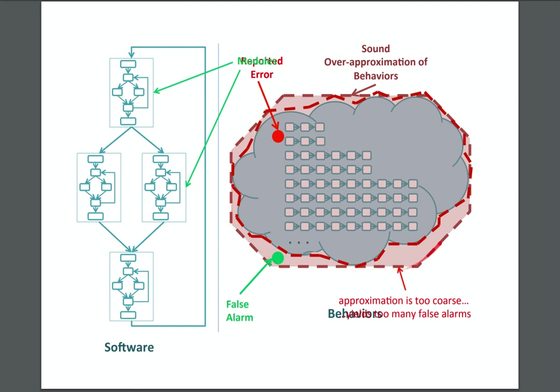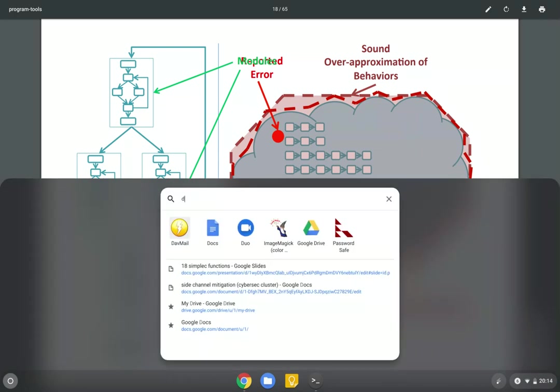Let's say we run our static analysis and it can't prove safety — we get an alarm — and we know the bug is somewhere. The hope is we can take a complete but unsound analysis to check these cases and rule out whether it's a false alarm. But the problem is since it's not sound, it may not give the right answer on all questions. It may not even find the bug. So we can't rule out whether the bug was in the real program or in our approximation.